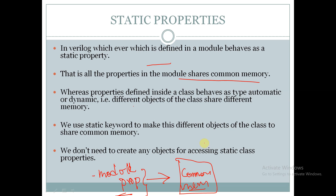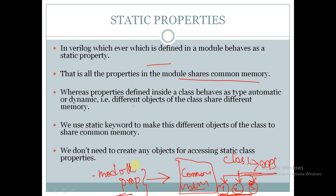Whereas a property which is defined inside a class will behave as automatic or dynamic — that is, different objects will share different memory. For a class with different objects, object1, object2, and object3 will each have different memories. This is the case in OOP, whereas in modules these properties share the same memory.